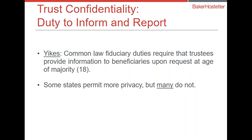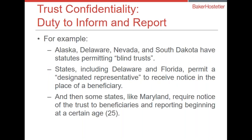One way to avoid that is to design the withdrawal rights so that beneficiaries who don't want to receive notice of the trust don't receive notice of the gifts. Under common law, there are fiduciary duties requiring trustees to provide information to beneficiaries upon request when they're adults. In other jurisdictions, this may be required on an affirmative basis. Some states permit more privacy, but many do not. In all my practice years, I have really not seen where somebody was actually willing to provide full transparency to an 18-year-old over their family's resources. Yet full disclosure at 18 is often a default in many of these arrangements.